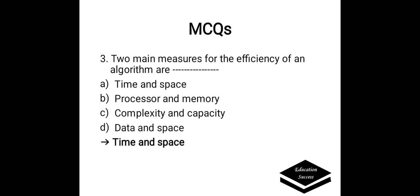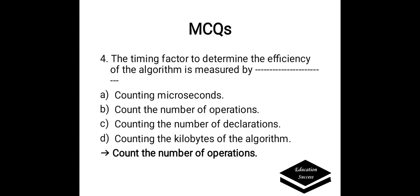The two main measures for the efficiency of an algorithm are: a) time and space, b) processor and memory, c) complexity and capacity, or d) data and space. The correct answer is time and space. These are the two measures for efficiency of an algorithm. The timing factor to determine efficiency is measured by counting the number of operations.